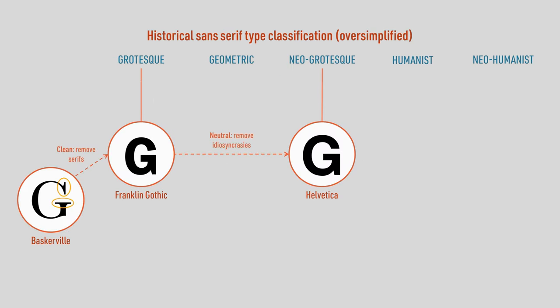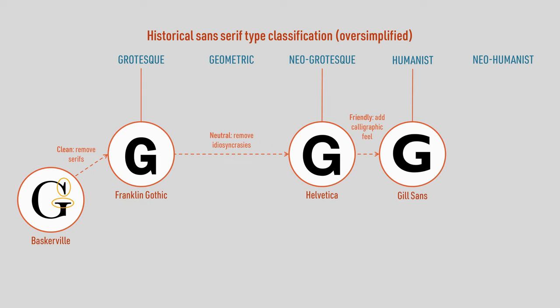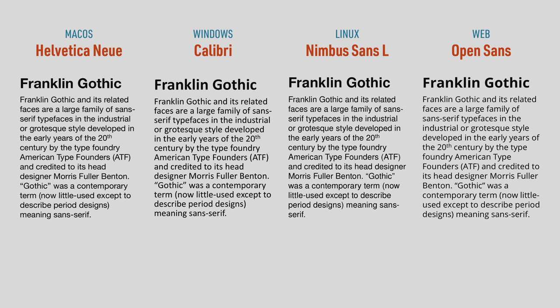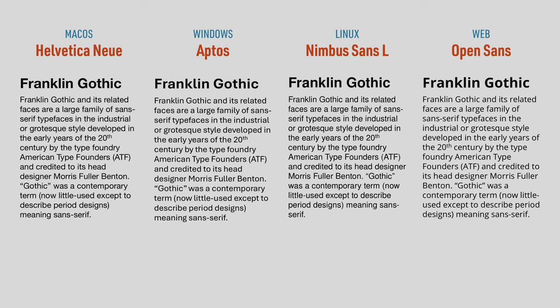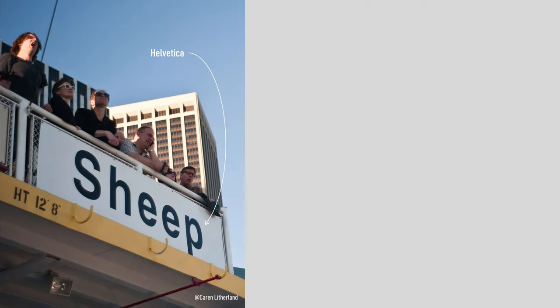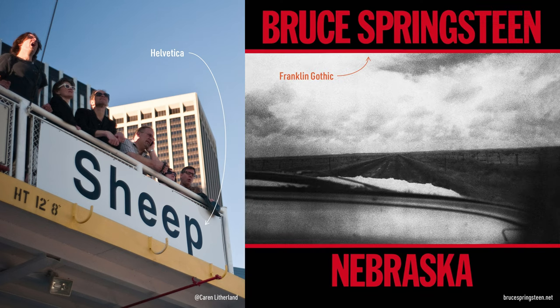Humanist fonts were a reaction to the active neutrality of neo-grotesque fonts. The aim with these was to reintroduce a calligraphic or handwritten feel to sans-serif typefaces, which is what makes them look friendlier. These days, though, our default and go-to fonts are heading back into neo-grotesque territory, with Aptos replacing Calibri as the default font in Microsoft Office, and Inter continuing to gain popularity on the web. My pitch to you in this video is to be a little less neutral, a little less boring, and to consider trying a more interesting grotesque font instead.